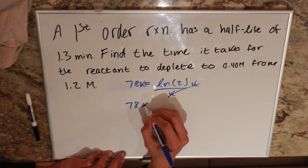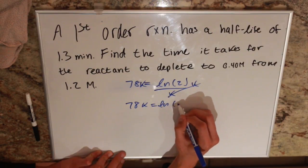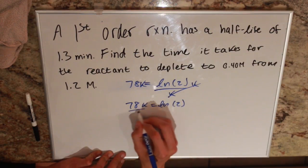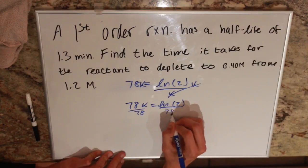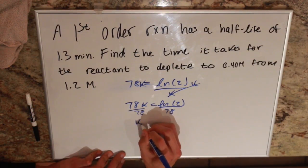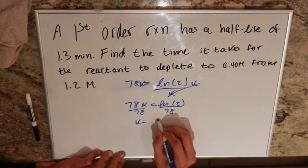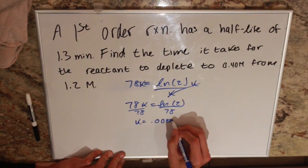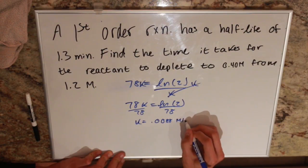Now we have t-half times k equals natural log of 2. We divide by t-half, which gives us a rate constant of 0.008 moles per second.